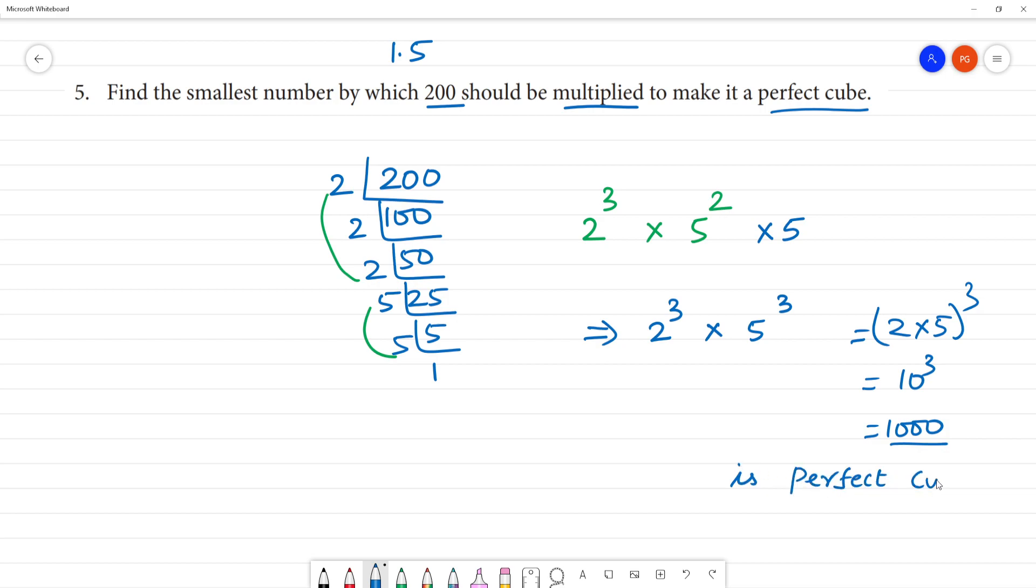So yeah, then the answer is the number should be multiplied by 5. Multiplied by 5, so if we multiply this number, 1000 is a perfect cube. Okay.